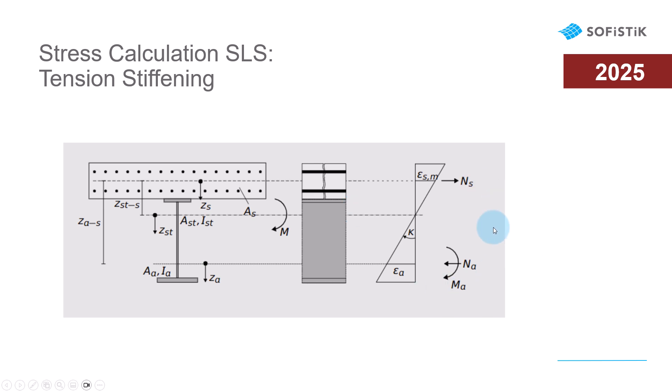Since equilibrium has to be fulfilled, this effect leads also to a reduction of stresses in the structural steel part of the section. In accordance with Eurocode 1994, module composite considers tension stiffening in the stress calculations for the serviceability checks, but not for the ultimate limit state design checks.